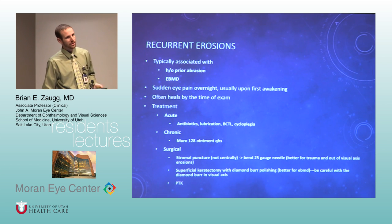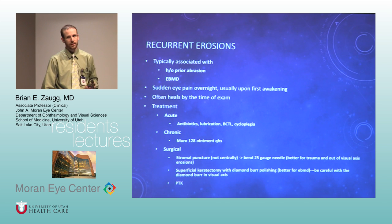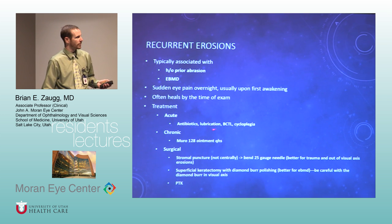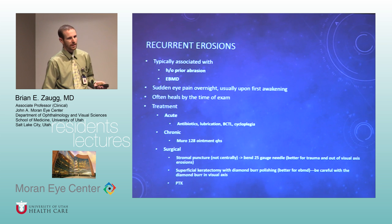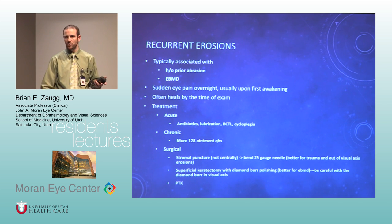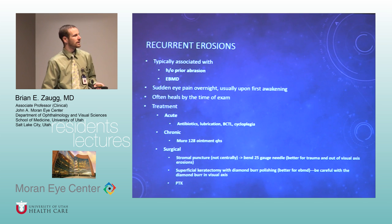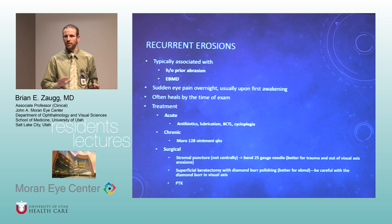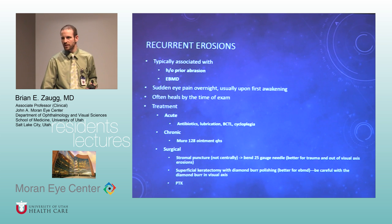Recurrent erosions are extremely common. There's usually a history of prior abrasion or trauma, but you also see a lot of this in EBMD. Generally patients wake up with pain in the middle of the night or first thing in the morning. Treat with antibiotics, lubrication, contact lens, and potentially cyclopentolate or atropine. If chronic, use Muro to help the epithelium stick better. Surgical treatment includes stromal puncture — puncturing through Bowman's to create scarring and adhesion — but only if peripheral, not central. For central cases, do superficial keratectomy with diamond burr polishing or PTK.